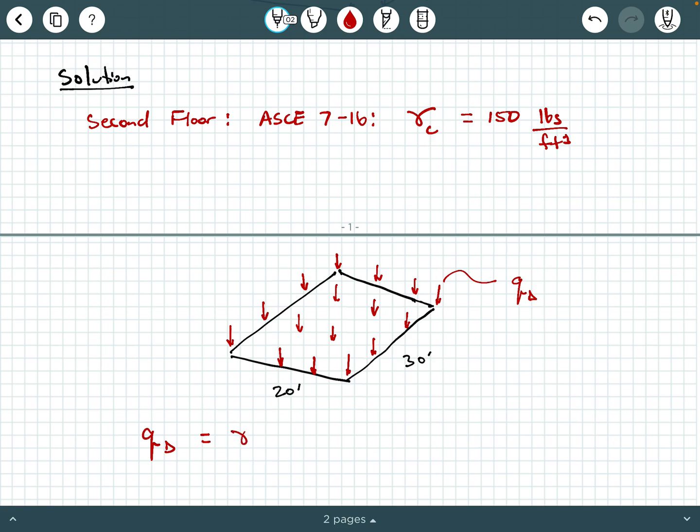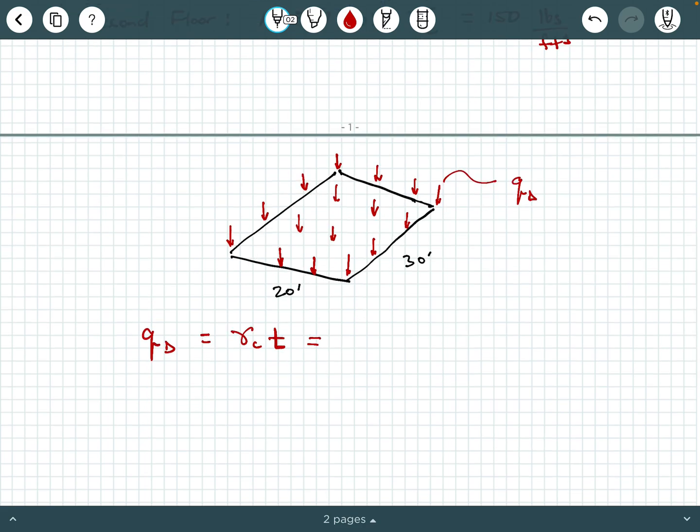Well, that would be this unit weight of concrete times the thickness of the slab. Well, we were told that thickness was six inches, right? So we would say 150 pounds per cubic foot times half a foot. So you got to convert those units there, and you'll get 75 PSF or pounds per square foot.